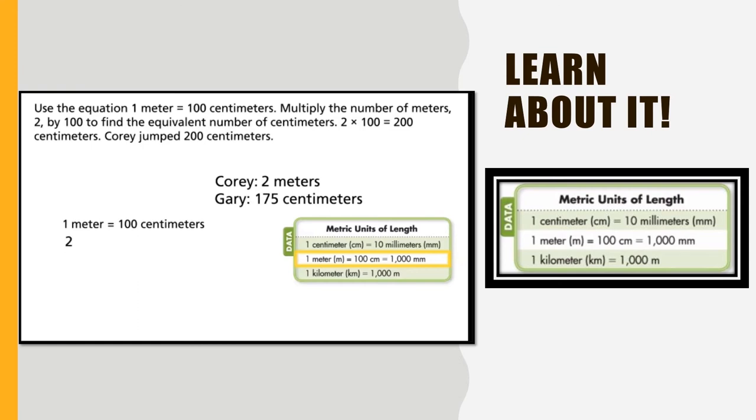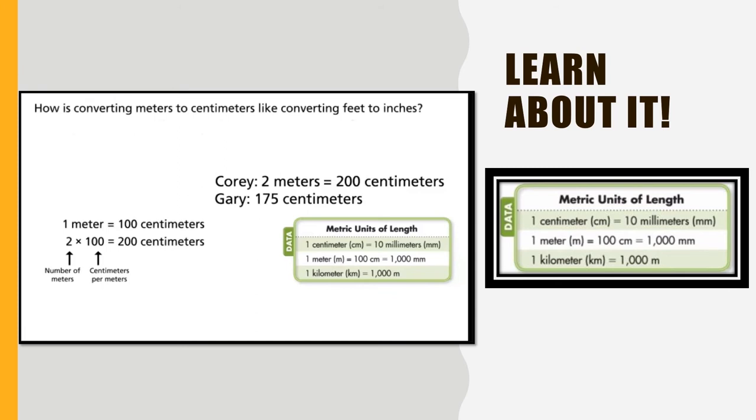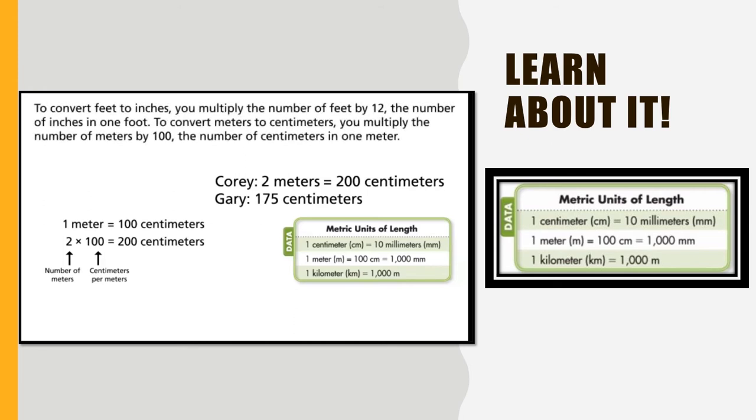Use the equation 1 meter equals 100 centimeters. Multiply the number of meters, 2, by 100 to find the equivalent number of centimeters. 2 times 100 equals 200 centimeters. Corey jumped 200 centimeters. How is converting meters to centimeters like converting feet to inches? To convert feet to inches, you multiply the number of feet by 12, the number of inches in one foot. To convert meters to centimeters, you multiply the number of meters by 100, the number of centimeters in one meter.